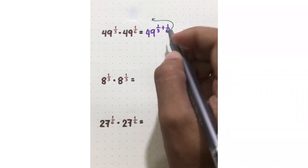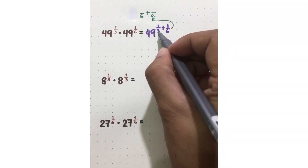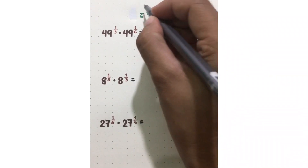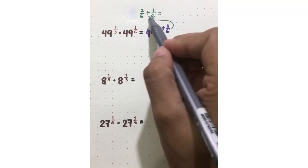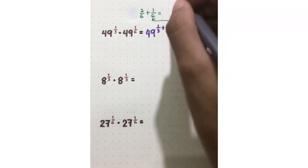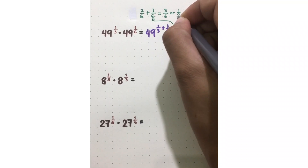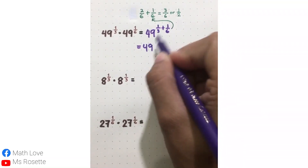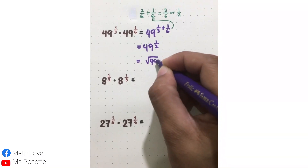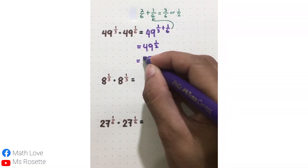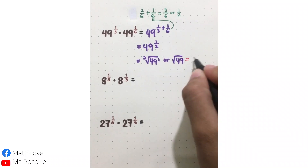The LCD of 1 third and 1 sixth is 6. Divide 6 by 3 — that's 2 — multiply by the numerator to get 2. Then 6 divided by 6 is 1, times 1 is 1. Add the numerators: 2 plus 1 is 3, and copy the denominator 6. So 3 over 6 simplifies to 1 half, meaning it will be 49 raised to 1 half. Converting to radical form: 49 inside the radical, numerator 1 as the exponent, denominator 2 as the index — or simply the square root of 49, which equals 7.